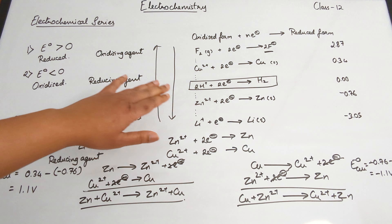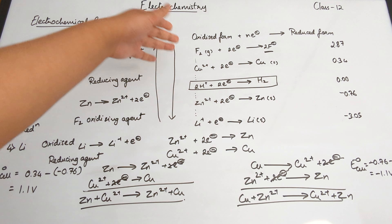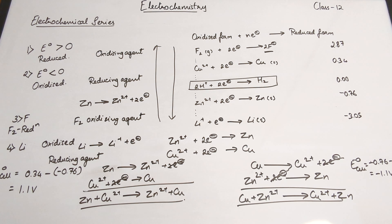Similarly, if copper is the anode, we have Cu → Cu²⁺ + 2e⁻ and zinc undergoes reduction: Zn²⁺ + 2e⁻ → Zn. The net reaction is Cu + Zn²⁺ → Cu²⁺ + Zn. The E⁰ cell equals E cathode minus E anode. In the first case, copper is the cathode: 0.34 minus (minus 0.76) gives us 1.1 volts.